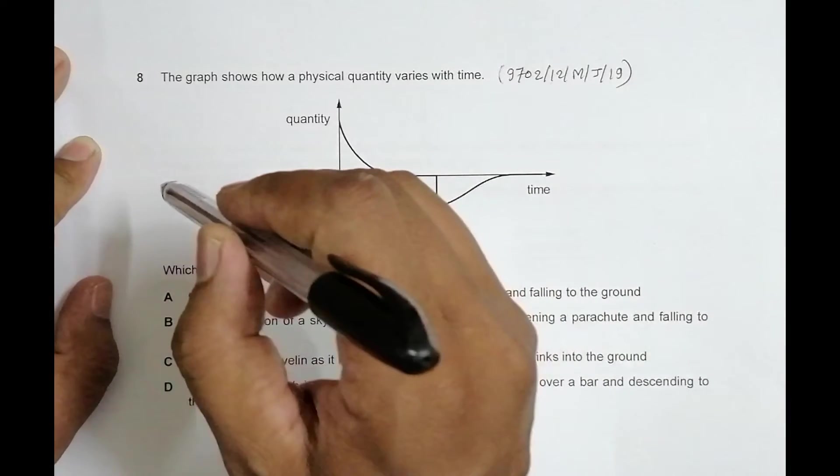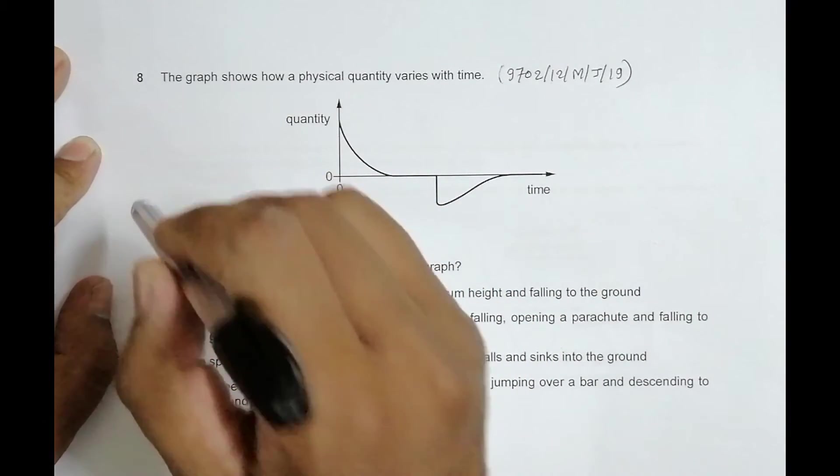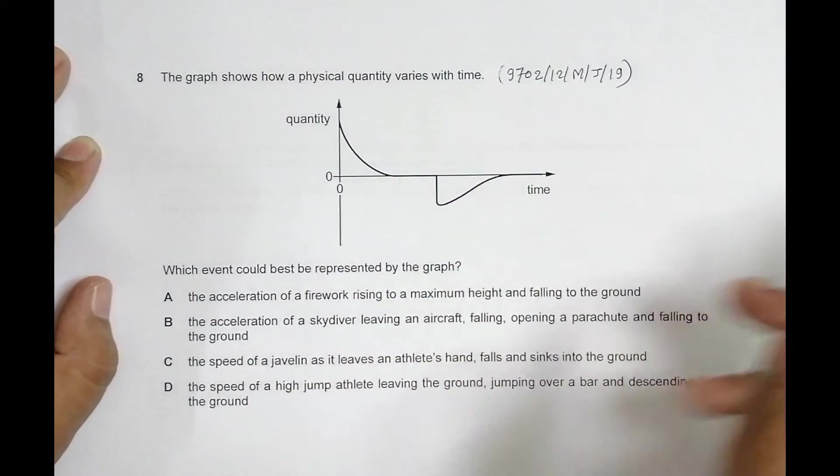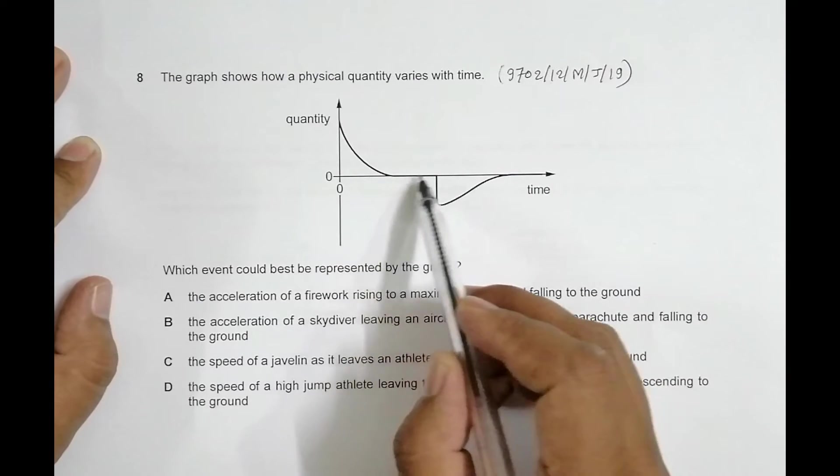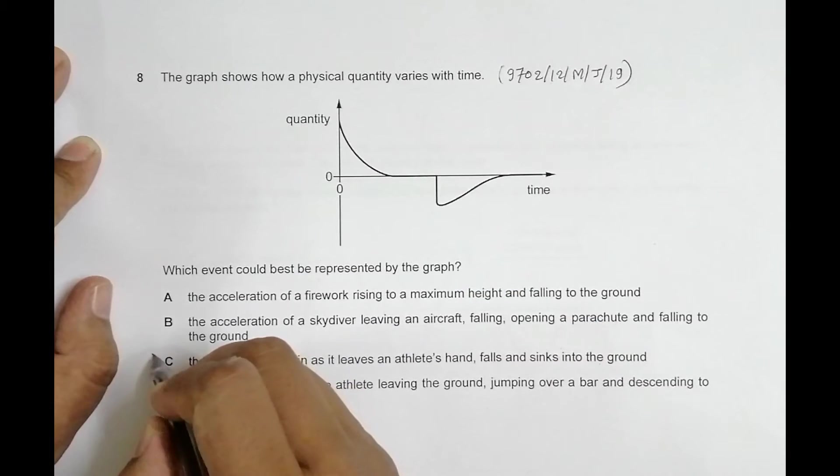It can be zero at the last only, but here the speed is zero somewhere in the middle stages, so this thing should be incorrect. Then we have the speed of the high jump athlete leaving the ground.